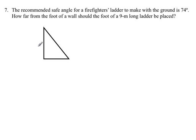Now for any word problem, the best thing you can do to start is underline any information you're given. So here you're given that the angle that the ladder makes with the ground is 74 degrees. You're also given that the ladder is 9 meters long.